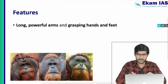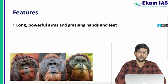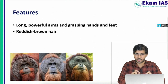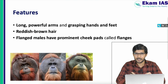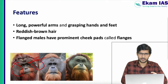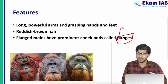Orangutans have long arms and grasping hands and feet with which they walk or climb, and their legs are short. Their color is reddish brown hair throughout their body. A third distinctive feature of male Orangutans is flanges — the padded cheeks visible on the face, which are a distinct feature of Orangutan males.